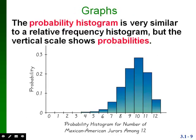We can also make a graph to represent a probability distribution — sometimes called a probability histogram. The only difference from a relative frequency histogram is that the vertical scale shows probabilities instead of relative frequencies. Along the horizontal axis we have the different possible values of x, and on the vertical axis we have the probabilities. The height of each bar shows the probability of that particular outcome.